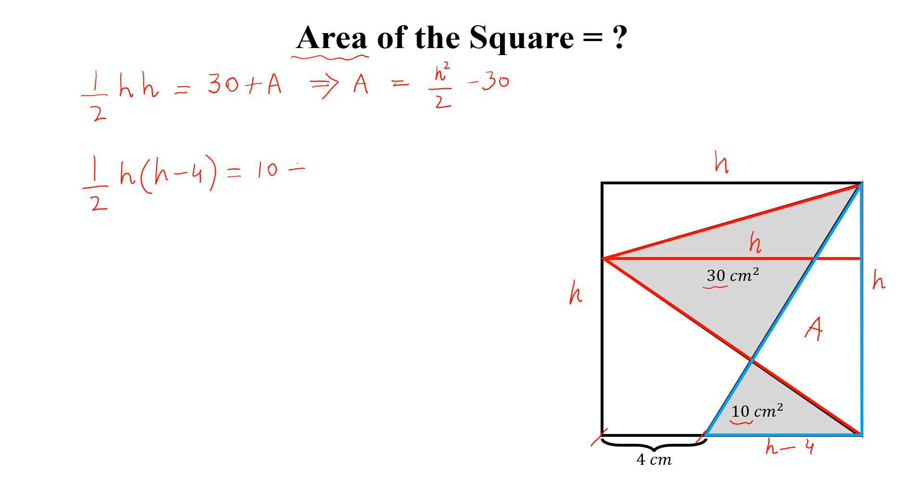Simplify this: h square by 2 minus 2h equal to 10.